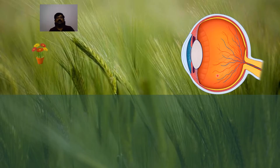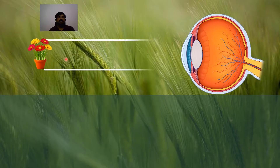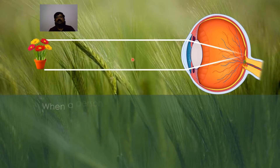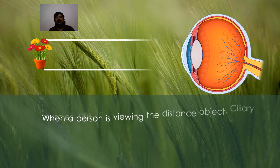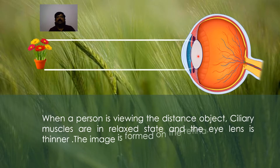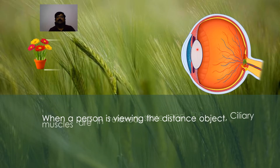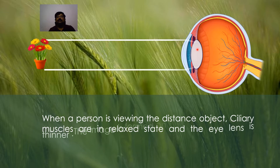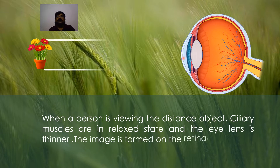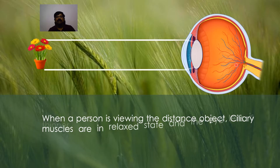In the case of a healthy person, they can see distant objects clearly and nearby objects clearly. When viewing a distant object, the image is formed exactly on the retina. The ciliary muscles are in a relaxed position and the eye lens is thinner, so its focal length is maximum. The image of the distant object is exactly formed on the retina.